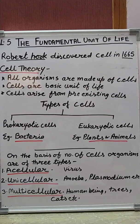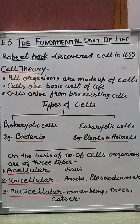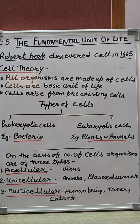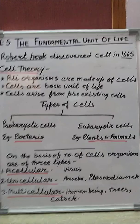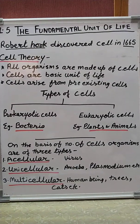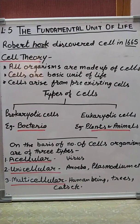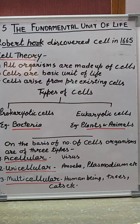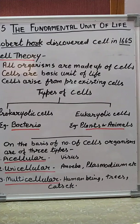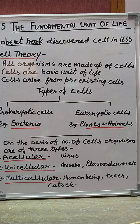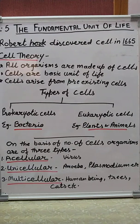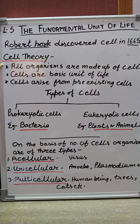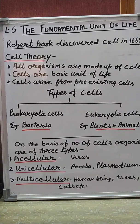Robert Hooke made his own microscope and observed a slice of cork under that microscope, where he found structures which are like a honeycomb. He gave those structures the name 'cell'.